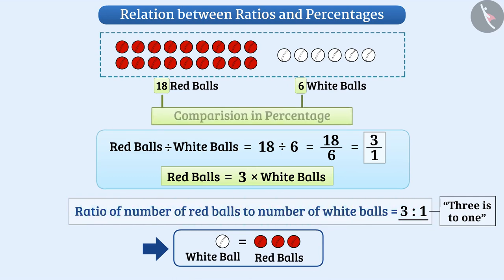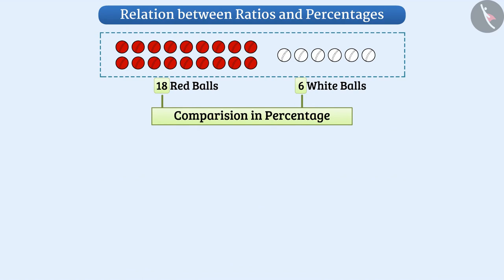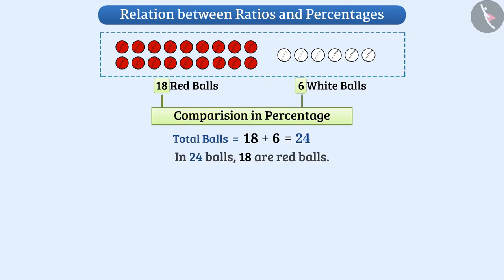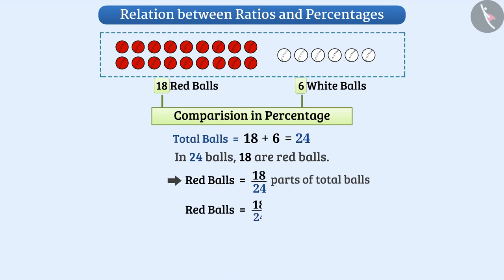Like ratio, we can also compare in percentage. The total balls are 18 plus 6, equal to 24. In 24 balls, 18 are red. So in the box, red balls are 18 divided by 24 multiplied by 100 percent, which equals 3 divided by 4 multiplied by 100 percent, equal to 75 percent.